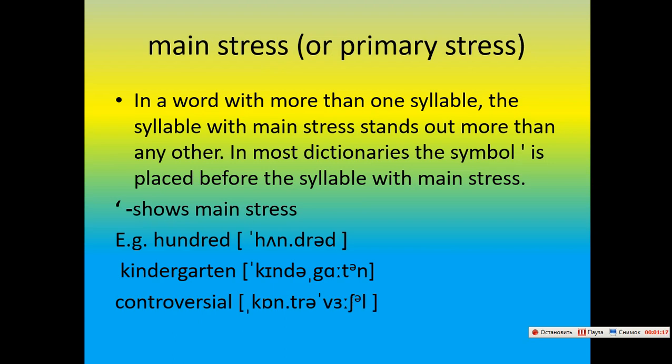Main stress, or primary stress. In a word with more than one syllable, the syllable with main stress stands out more than any other. In most dictionaries, the symbol is placed before the syllable with main stress. The apostrophe shows main stress. For example: kindergarten, controversial.